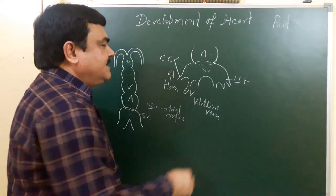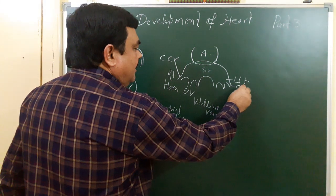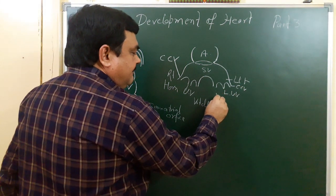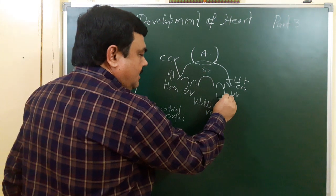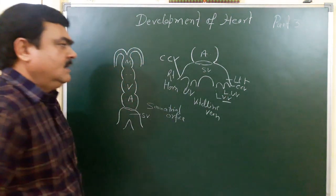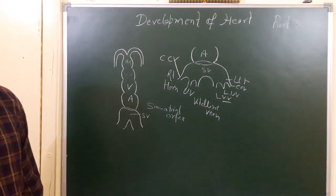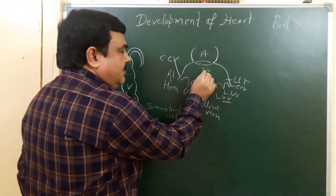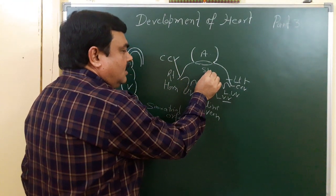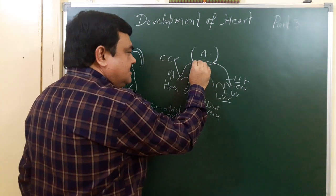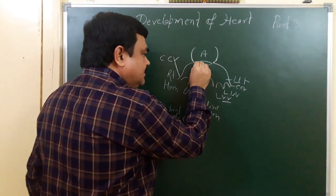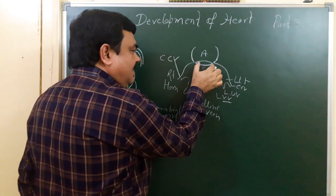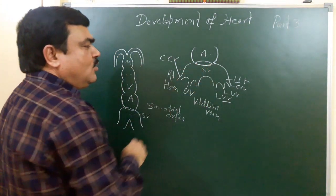Similarly, on the left side, this is the left common cardinal vein, left umbilical vein, and left vitelline vein. Here you can see the sino-atrial orifice shape is transverse and centrally placed — centrally placed and transversely oriented.